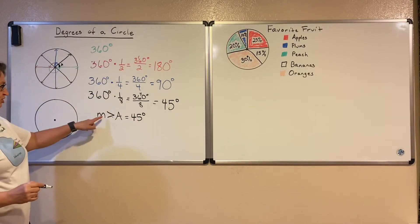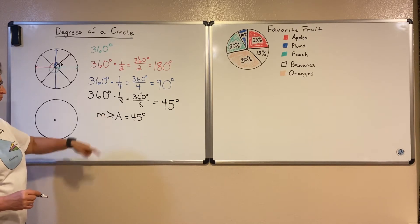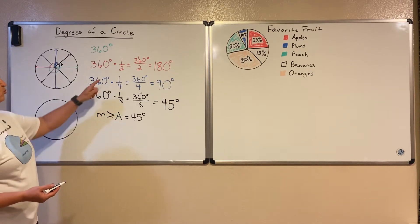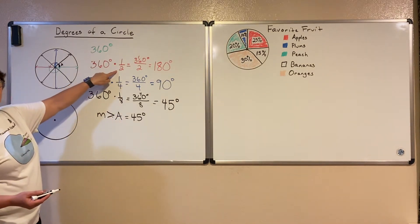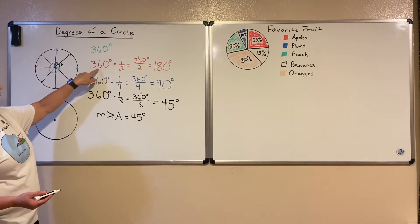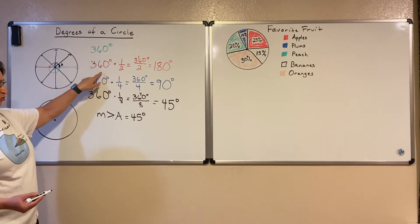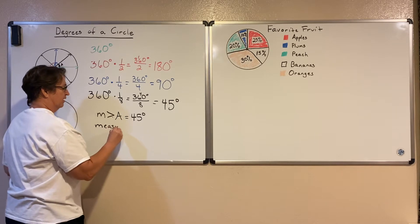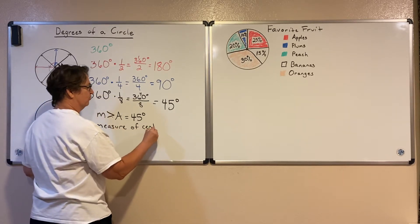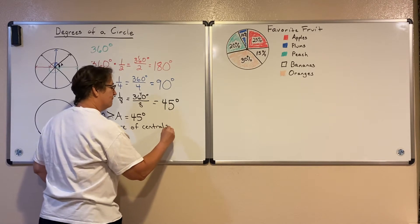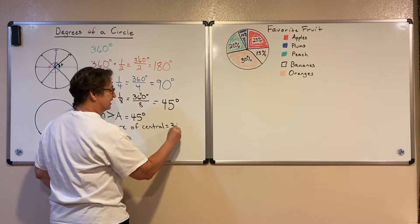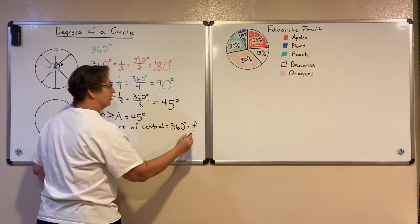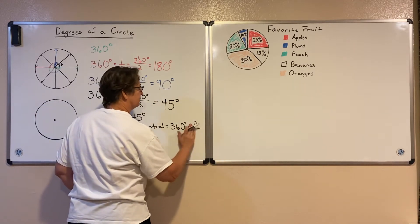This little notation just means the measure of the angle. Notice that in order to find the measure of the angle each time, all we did was take the fraction of the circle and multiply it times the total number of degrees in our circle. So to find the measure of the central angle, we just multiply 360 times our fraction.